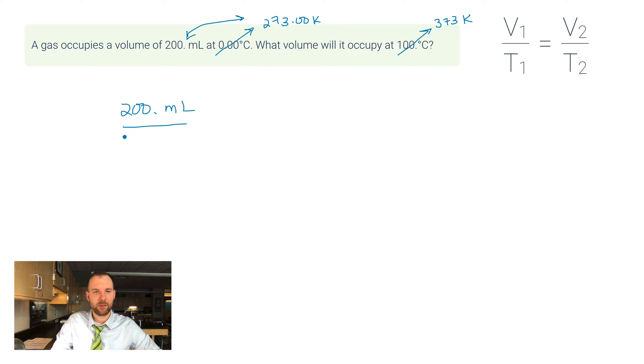So let's use this Charles's Law equation. 200 milliliters goes up on top, on the bottom I have 273.00 Kelvin, and that's going to be equal to V2. On the other side, I don't know this - some of my students I've noticed have just put x in there because they're used to solving for x in algebra classes, and if that's comfortable for you, do that. And on the bottom, T2 is going to be 373 Kelvin.